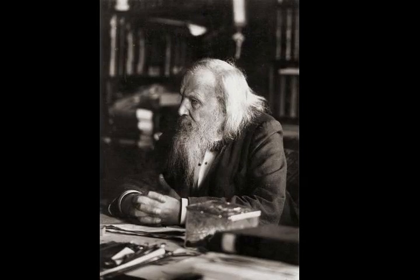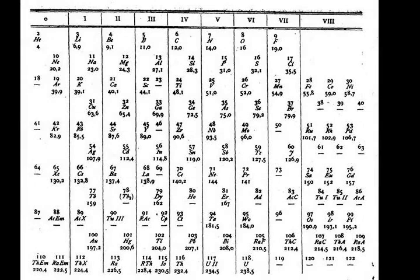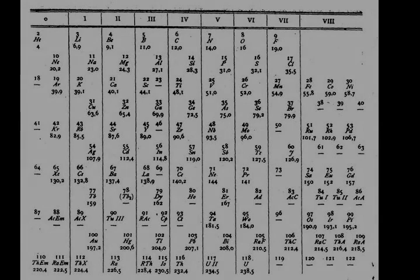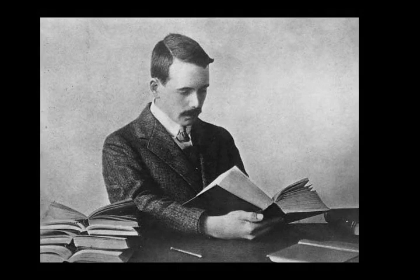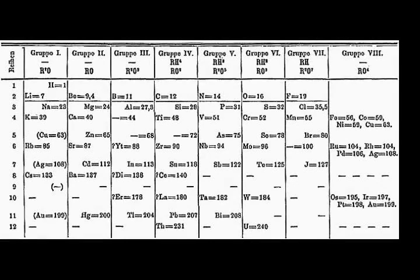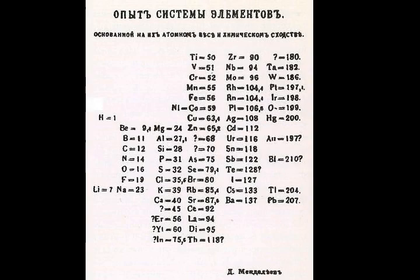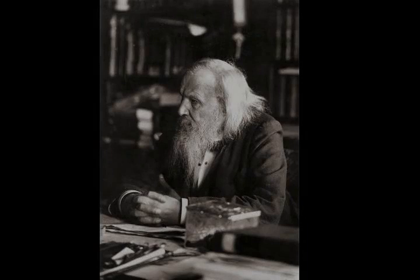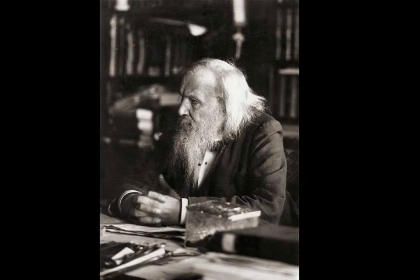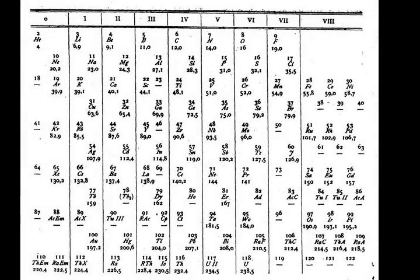This completes the modern periodic table, with all seven rows completely filled to capacity. The main group elements have entirely regular electron configurations; the transition and inner transition elements show a number of irregularities due to competition between subshells close in energy level. For the last 10 elements, experimental data is lacking and therefore calculated configurations have been shown instead. For reasons of space, the periodic table is commonly presented with the f-block elements cut out and placed as a footnote below the main body of the table. The form with the f-block included is sometimes called the 32-column or long form; the form with it cut out is called the 18-column or medium-long form.